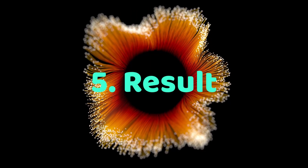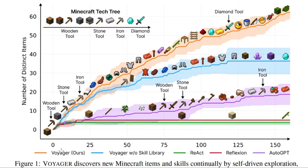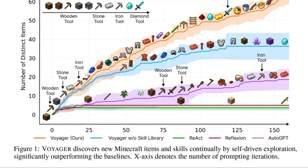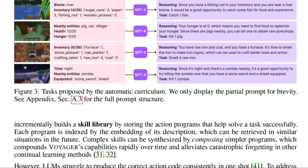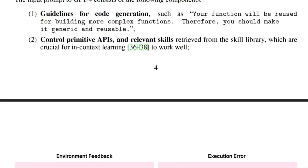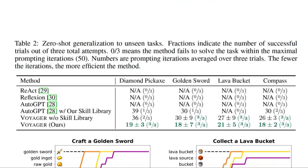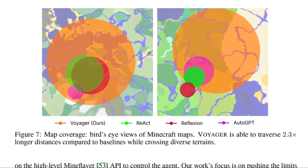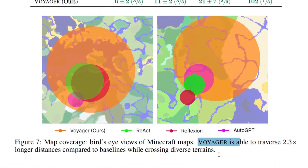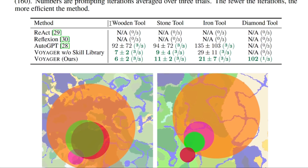Voyager discovers new Minecraft items and skills continuously through self-driven exploration, significantly outperforming baselines. Since no baseline algorithms work out of the box for Minecraft, they executed other algorithms for comparison on MindDojo. These include ReAct, which uses chain-of-thought prompting by generating both reasoning traces and action plans with LLMs; Reflexion, which builds on ReAct with self-reflection to infer more intuitive future actions and an execution plan with a self-verification module; and AutoGPT, which automates NLP tasks by decomposing a high-level goal into multiple sub-goals and executing them in a ReAct-style loop.